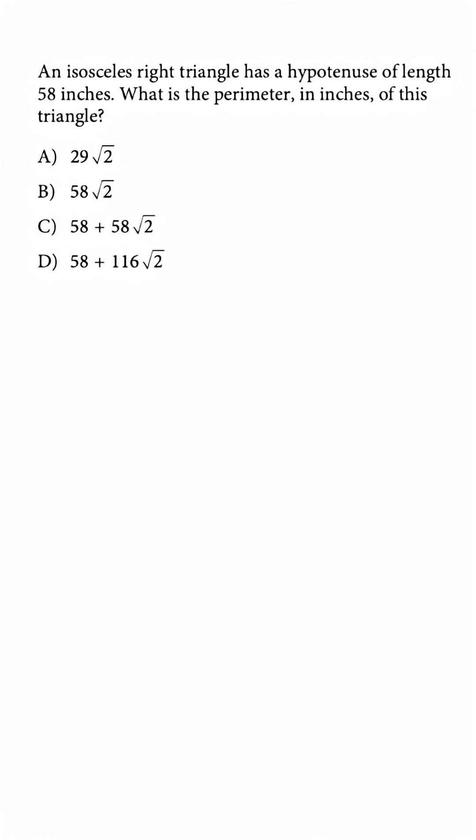An isosceles right triangle and the only length they give us is the hypotenuse and they want us to determine the perimeter. So if you remember with this type of triangle, the legs have the same length.